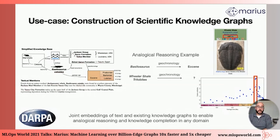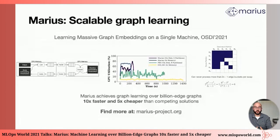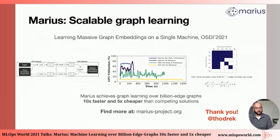To recap, Marius relies on two key ideas — pipelining and the new beta ordering — to achieve graph learning over billion-edge graphs that is 10 times faster and five times cheaper, because we can perform large-scale graph learning on a single box. Marius is open source. I would love to have you try Marius, and please reach out with feedback and questions.